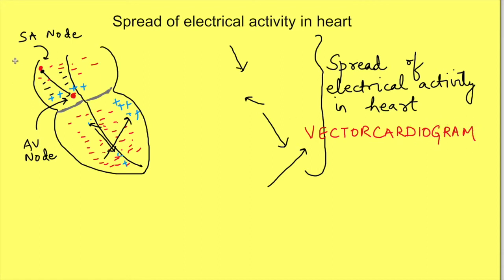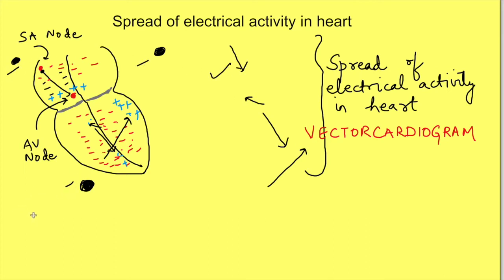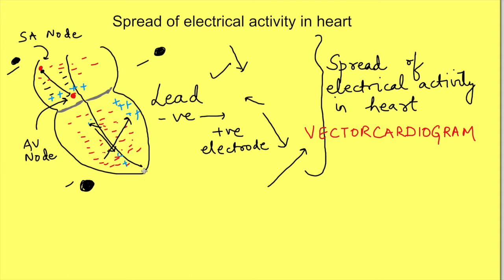To record this spread of electrical activity, we place electrodes around the heart. The way electrical activity is recorded depends on two things: first, the average direction of spread of electrical activity, and second, where we put the positive and negative electrodes on the body - which we can also call the direction of the lead, taken from negative to positive electrode. Whenever the direction of the lead is the same as the direction of the spread of depolarization, it is recorded as a positive wave.